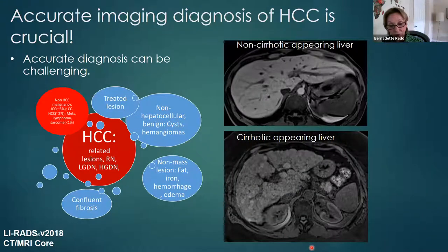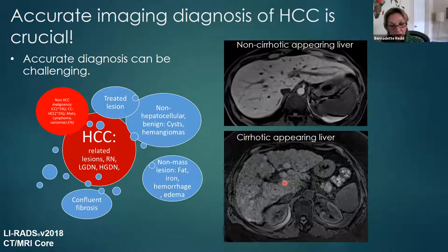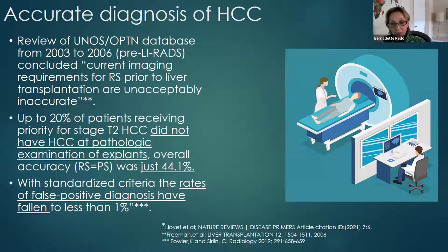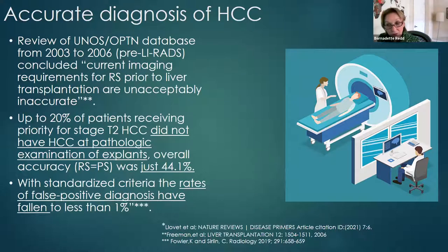Most patients with HCC have cirrhosis. However, the morphologic changes of the liver — the nodularity and heterogeneity associated with cirrhosis — make the diagnosis of HCC more challenging. It's more difficult to pick out a malignant nodular focus in a liver with multiple nodular foci, as seen in a cirrhotic liver, compared with a non-cirrhotic appearing liver. Accurately distinguishing the several different types of benign and malignant nodules that can occur in a cirrhotic liver is also an issue. Imaging is needed to accurately stage disease burden and determine eligibility for transplantation, options for local and regional therapy, and the need for systemic therapy. However, the criteria for the imaging diagnosis of HCC have not always been well defined.